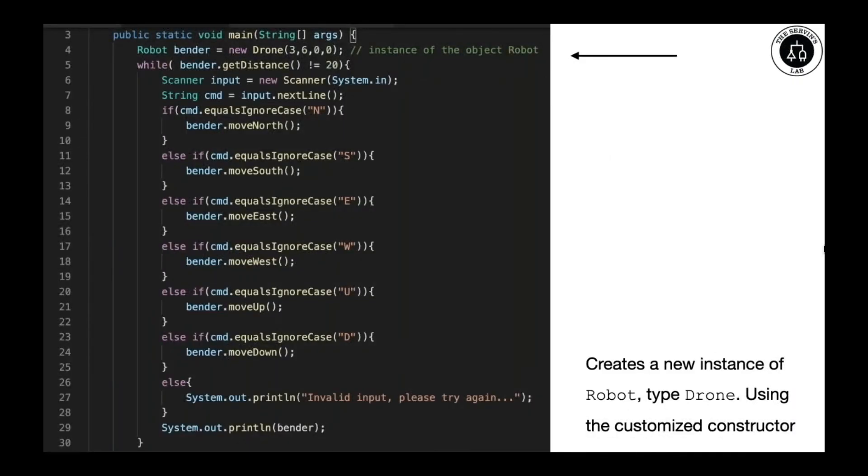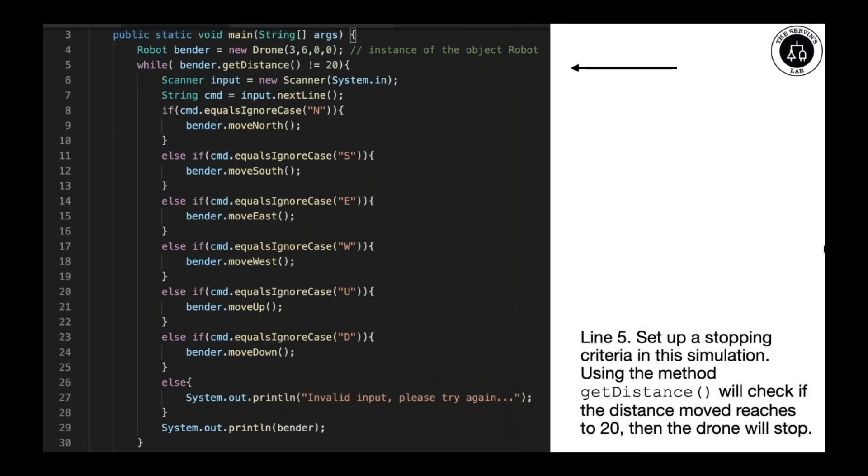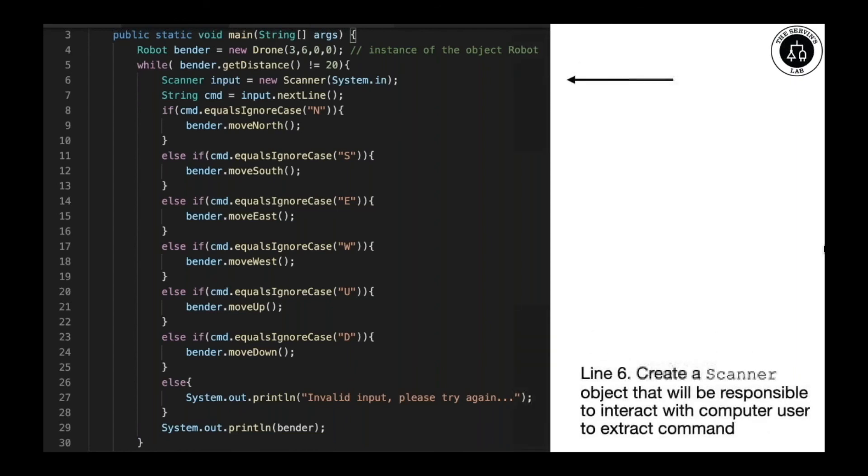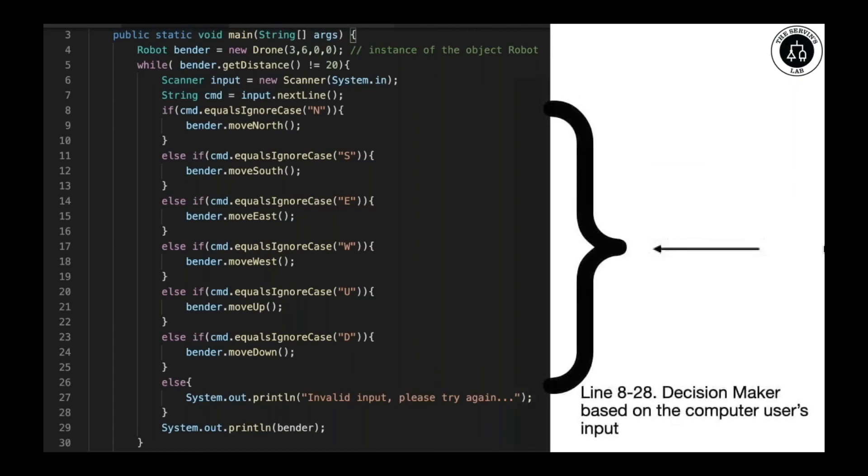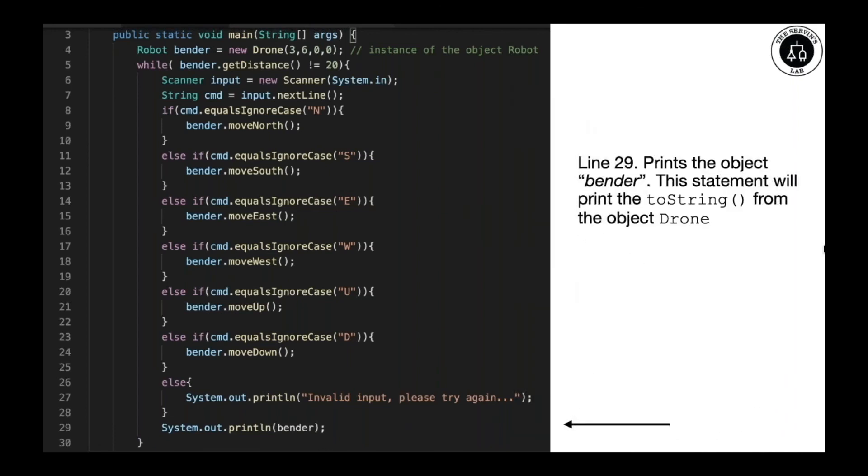When we create our instance in our main, we will create a drone and then we'll interact with the computer user as the simulated version of how many distance you would like to run it. Suppose that you reach 20, you can move north, south, east, west, up, or down based on the description. Line 6 will basically create the interaction with the computer user and extract the command. On line 7, we'll extract the command from the computer user and store it in a string. The rest is just a multiple option, how we want to move through those directions. It's a decision maker based on the computer user's input.